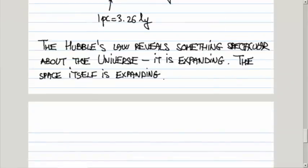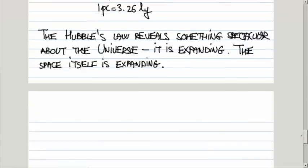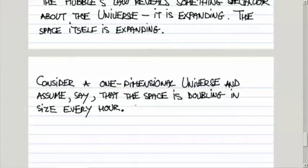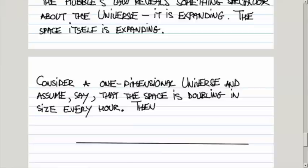How can we see that Hubble's law implies an expansion of space? To illustrate that, I'll take the simplest possible case of one-dimensional universe, the universe that exists only in a straight line, and assume that the space itself is doubling in size every hour. Then we have the following. So here is our one-dimensional universe. So I will depict a situation that exists, say, now.